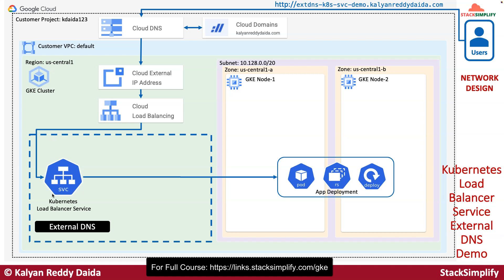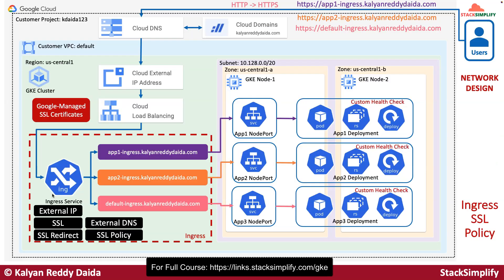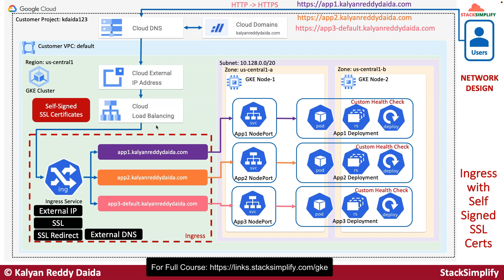The external DNS controller can work with both the ingress service and also a regular L4 load balancer service, which is why we implement that demo too. From there, we will understand about SSL policies and implement an ingress SSL policy. After that, we will move on to implementing ingress with identity aware proxy, where authentication and authorization happen using identity aware proxy out of the box for our applications. A Kubernetes-hosted application with identity aware proxy provides authentication and authorization — this is a very important demo. We will then move on to implementing ingress with self-signed SSL certificates.